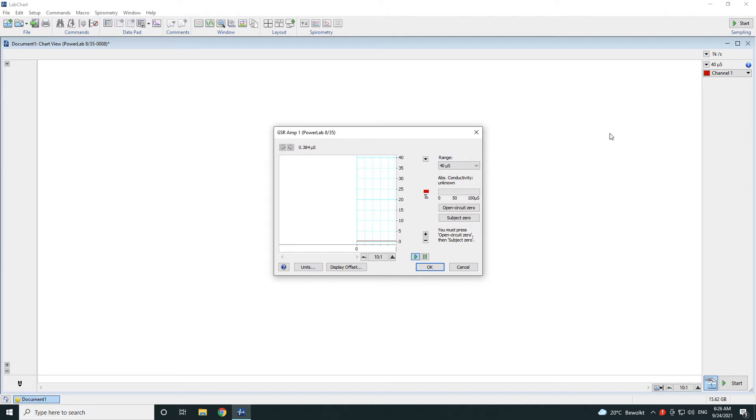In this dialog you can set up the range of the input signal, but for zeroing it can be left on 40 µS.